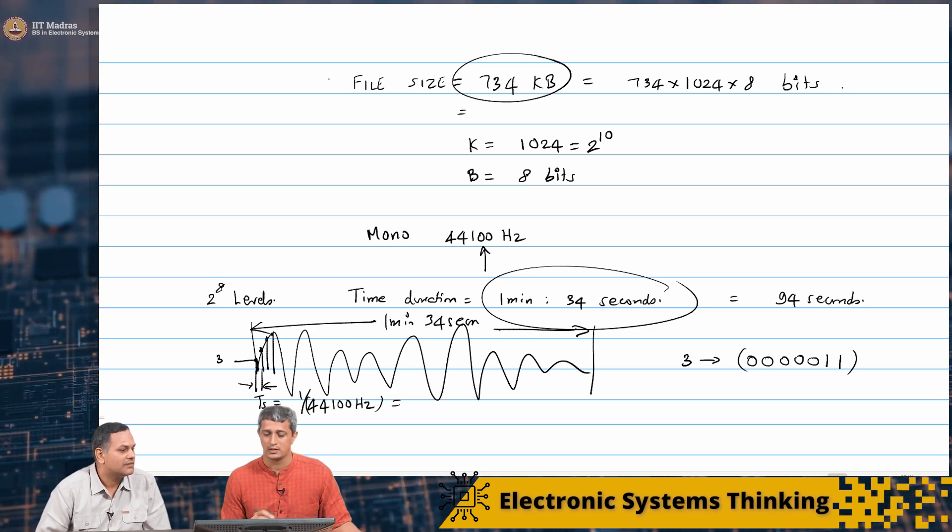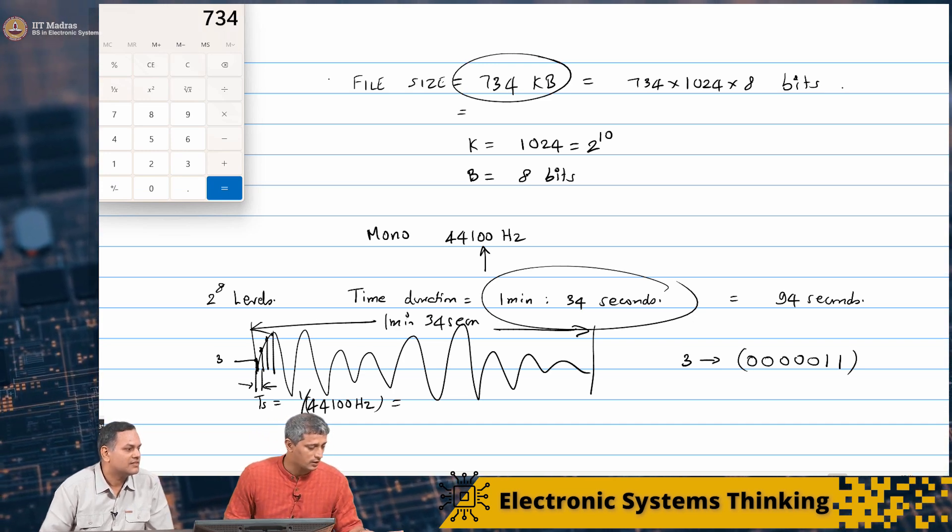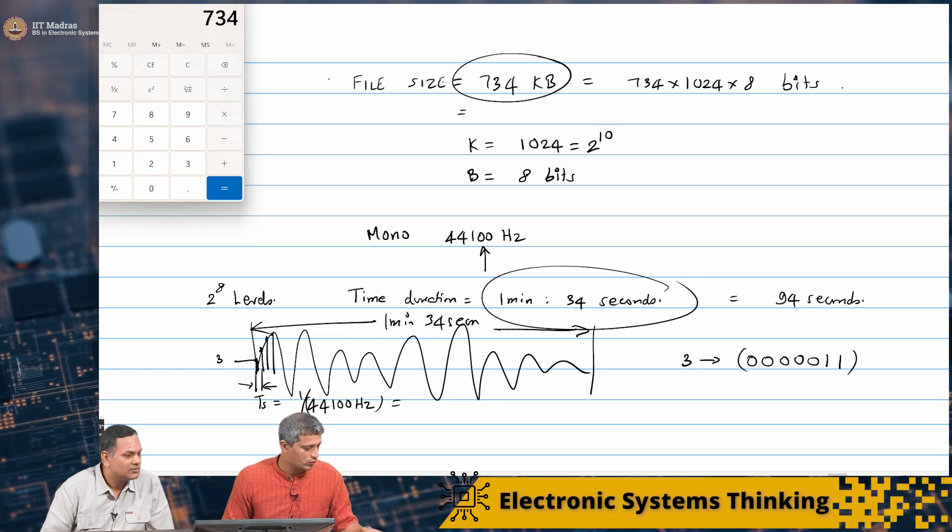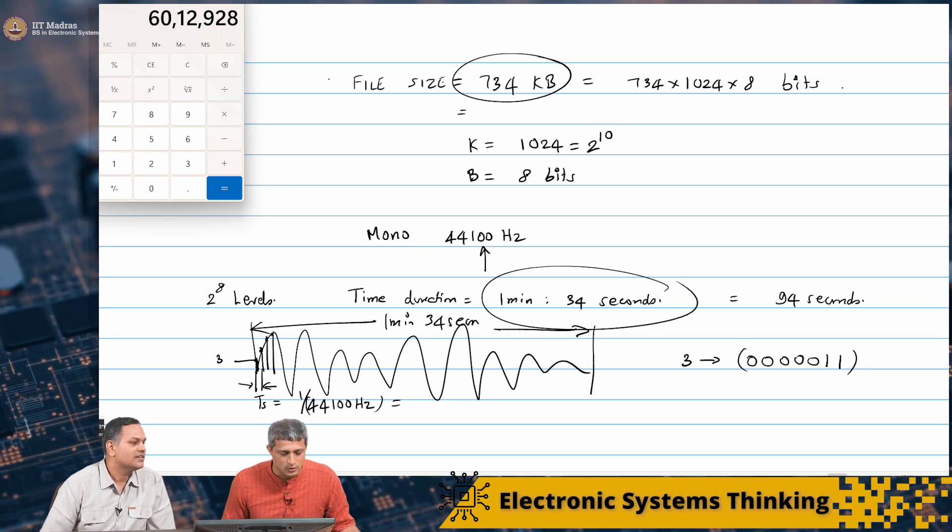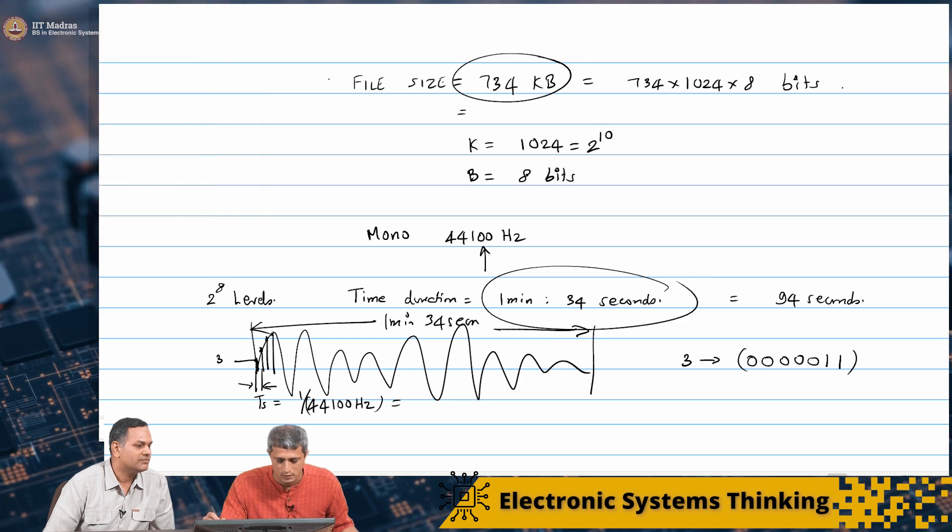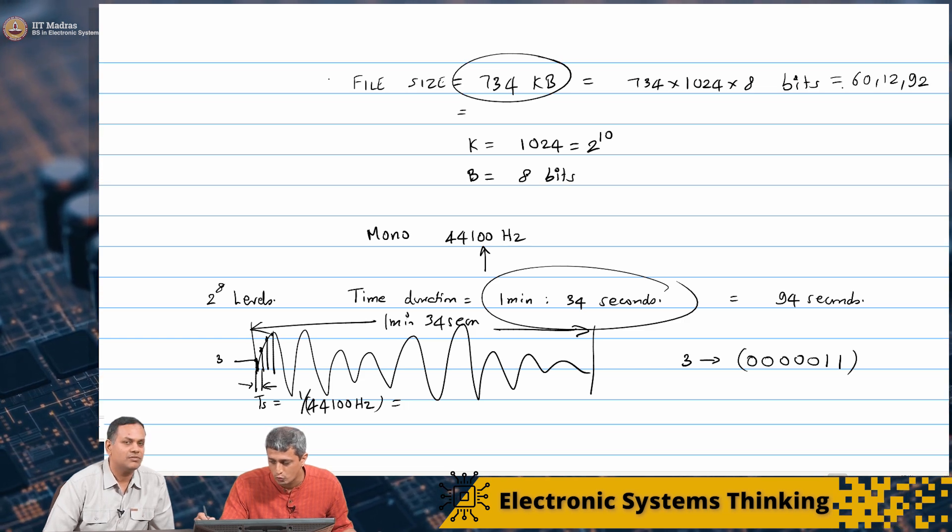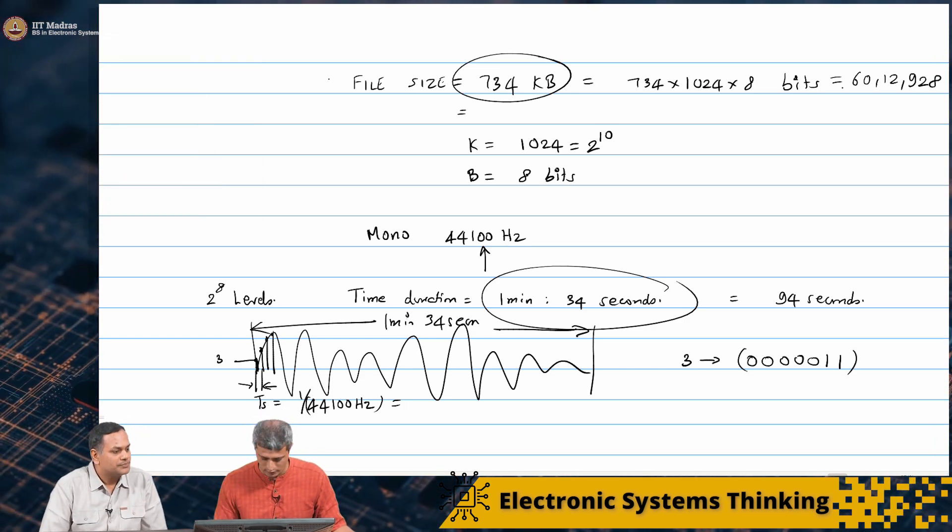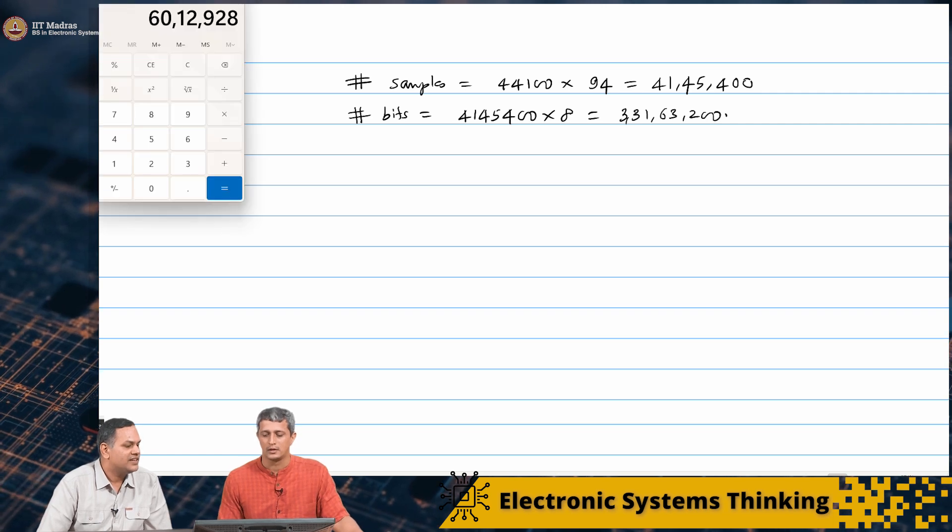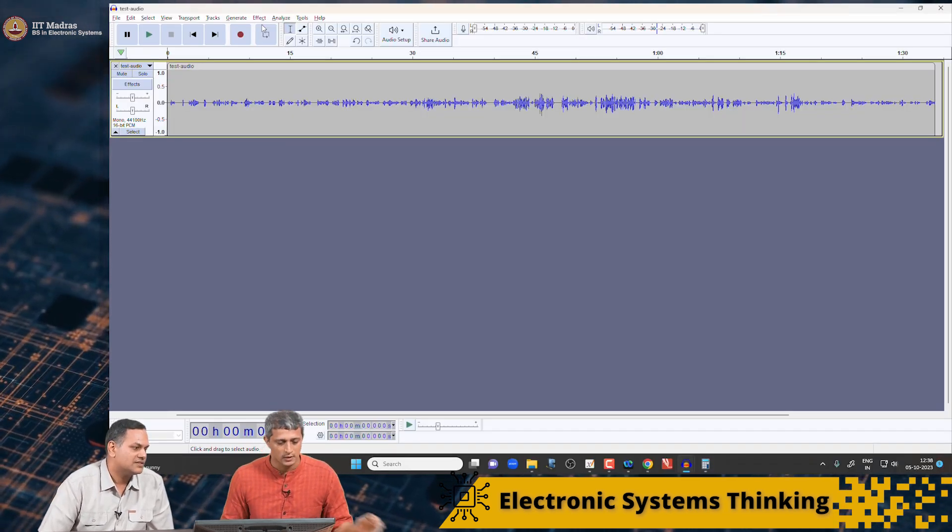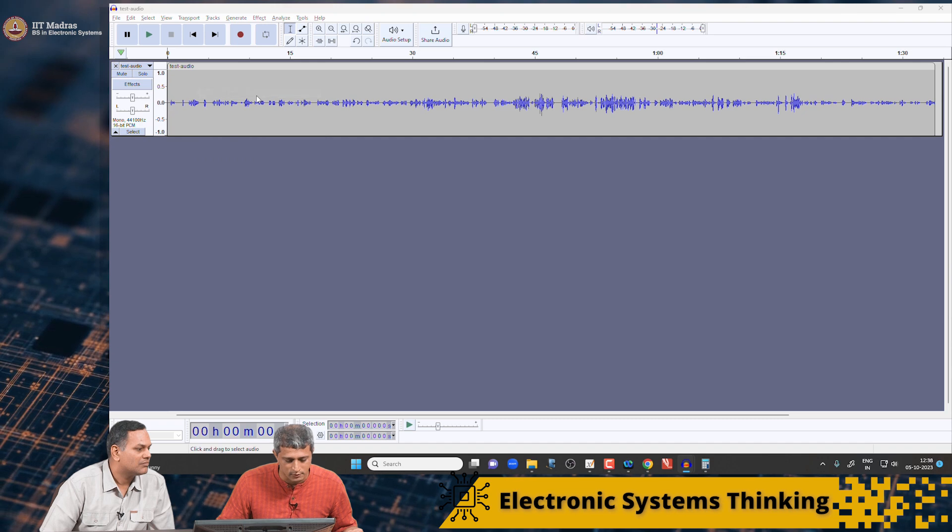And what did we get here? 734 KB. Let us see if that adds up now. 734 into 8 into 1024. How many do you get? 6,012,928. And what do we get here? 33,163,200.